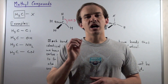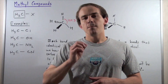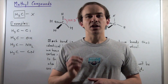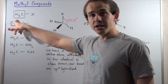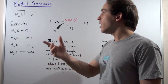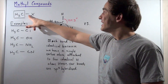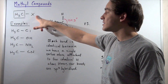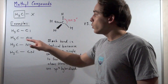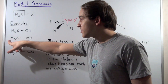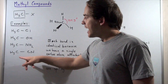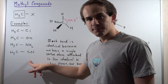Let's discuss methyl compounds. Methyl compounds are simply compounds that have the side chain or side group CH3. The CH3 is attached covalently to some other atom or molecular compound, given here as X. This X could be anything. Here are a few examples: we have methyl chloride, methyl alcohol or methanol, methyl amine, and methyl cyanide.